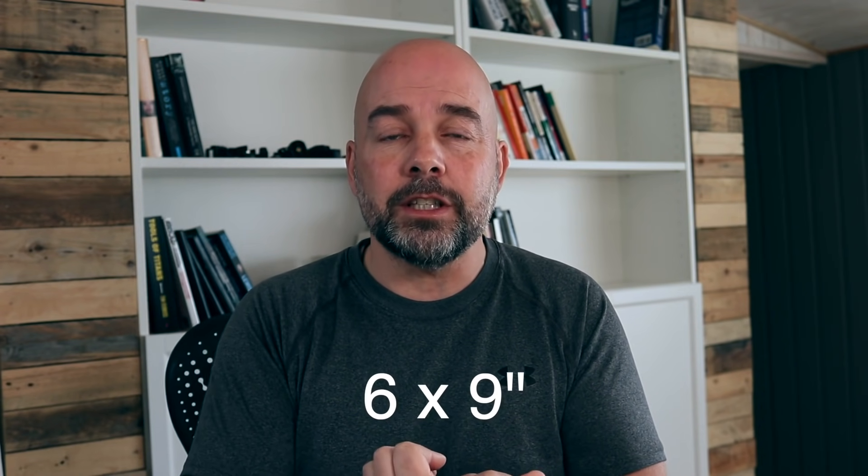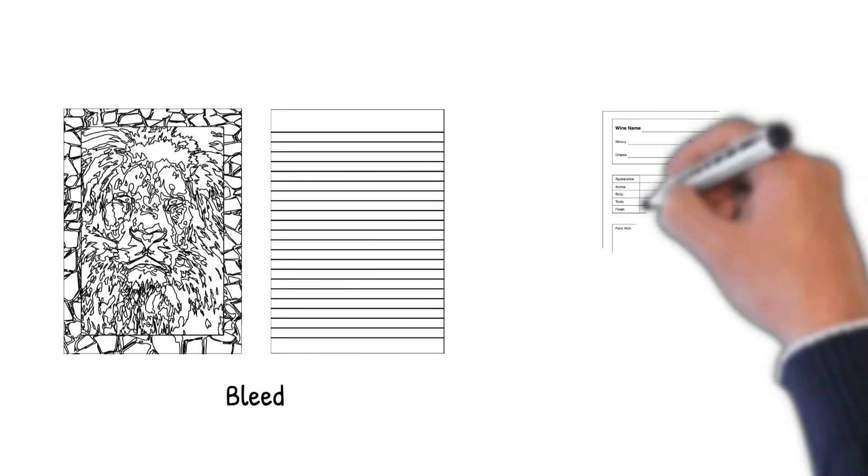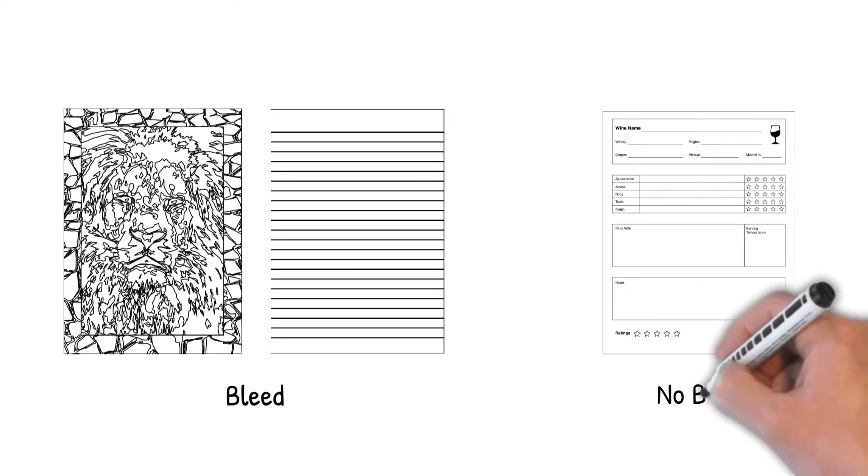Now we're onto the interior, which is the bit that can cause some confusion. Decide on the page size — we've already done that: six by nine inches. Then we have to decide whether the pages will have bleed or no bleed. This is determined by your content. If you have images or content that goes right to the edges of the page, this is called bleed. If the content doesn't reach the edges and there is a margin around it, this is called no bleed. Even if just one page has content going right to the edge, the whole document will need bleed settings. If it doesn't, the page size would simply be six by nine inches.